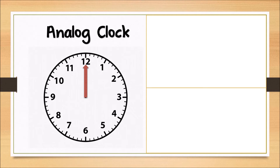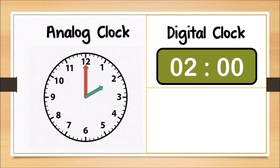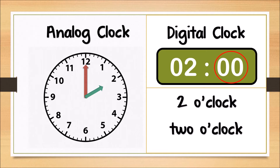Now, look at this analog clock. The hour hand is pointing to number 2, and the minute hand is pointing to number 12. This is a digital clock. The number on the right is telling us the hour, and the number on the left is telling us the minute. So, we can say this time as 2 o'clock.